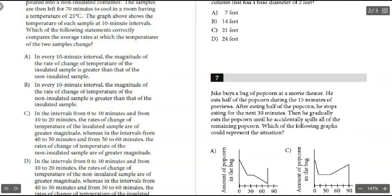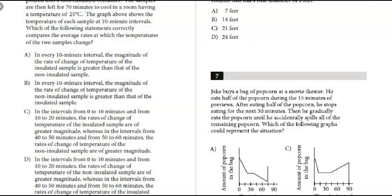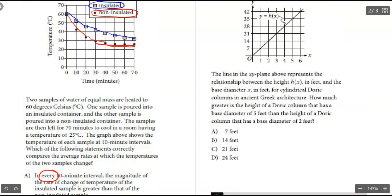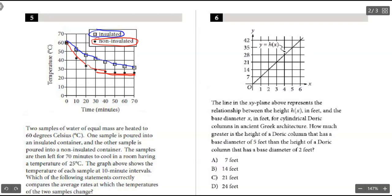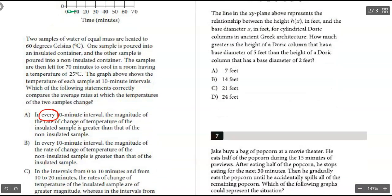So let's go down and look at the potential answers here. Part A says in every single 10 minute interval the magnitude—you got to be careful whenever you see the word 'every,' that usually is an indicator that there might be a situation where it doesn't always happen. So be careful when you see that word. The magnitude of the rate of change, so the slope of the temp of the insulated is greater than non-insulated. Well, let's kind of look. I don't think this very first interval, from 0 to 10, it looks like the non-insulated is dropping more than the insulated, so I think A is out.